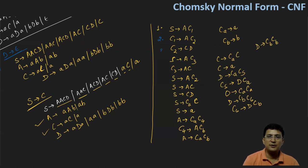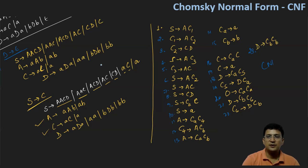And D produces BB, which can be written as CB and CB. So we can count all productions: 1, 2, 3, 4, 5, 6, 7, 8, 9, 10, 11, 12, 13, 14, 15, 16, 17, 18, 19, 20, 21, 22, and 23. These are the 23 productions in the Chomsky normal form CFG.